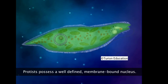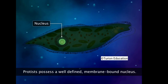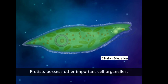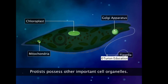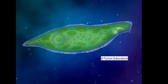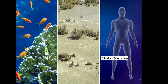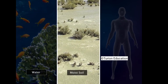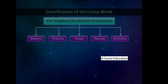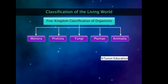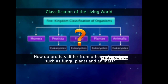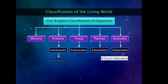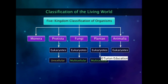Like all other eukaryotes, protists possess a well-defined membrane-bound nucleus and may also possess organelles such as mitochondria, Golgi apparatus, and chloroplast. They may possess flagella or cilia for locomotion. Protists thrive in water bodies, moist soil, and within the human body. Most protists are unicellular, distinguishing them from the multicellular fungi, plants, and animals.